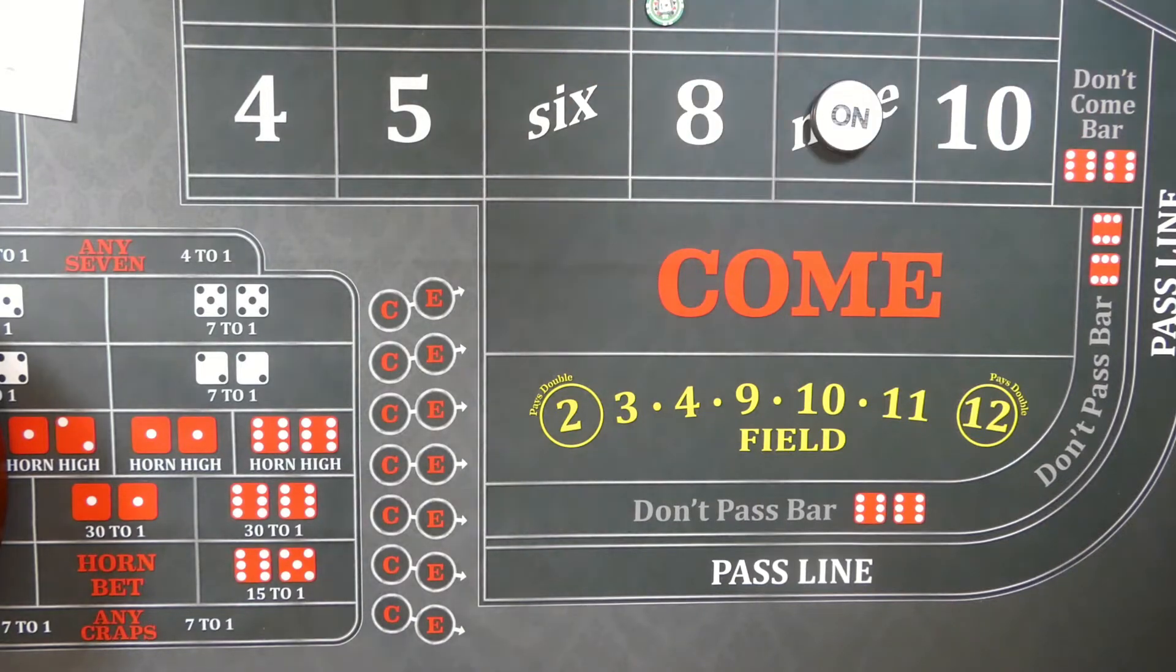Once you get behind a number, regardless of the number, be it six and eight, five and nine, four and ten, once you're behind a number, the odds favor you. The odds favor this bet. No matter what the number is, there are always more ways to throw a seven than there are to throw that particular number.